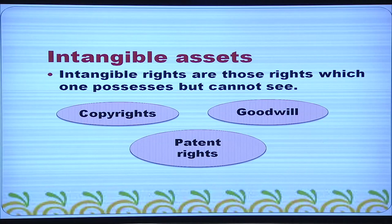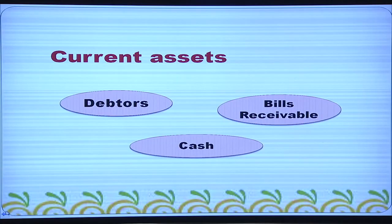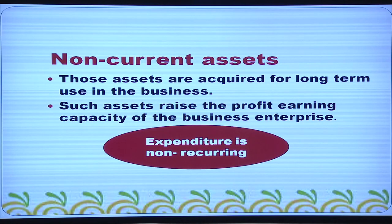Intangible rights are those rights which one possesses but cannot see. Copyrights, goodwill, and patent rights are intangible assets. Current assets are those assets which are held for a short period, usually one year. The balance of a current asset fluctuates throughout the year. Debtors, bills receivable, and cash are examples of current assets. Assets acquired for long-term use in the business are called non-current assets.